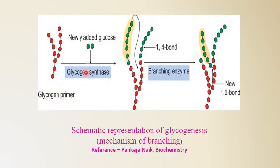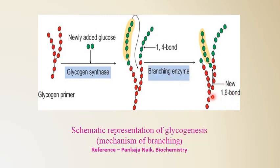To recap: the glycogen primer acts with glycogen synthase, adding glucose units with 1,4 linkages only. Then the branching enzyme comes into action, forming the new alpha-1,6 bond. So glycogenesis involves glycogen synthase and the branching enzyme.